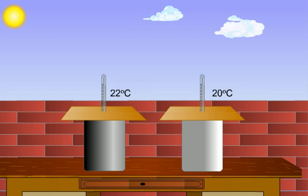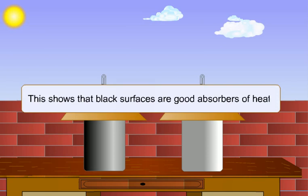This shows that black surfaces are good absorbers of heat. Now replace water in both the cans with equal volume of hot water and place them in the shade.